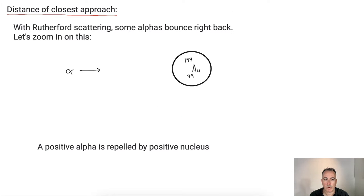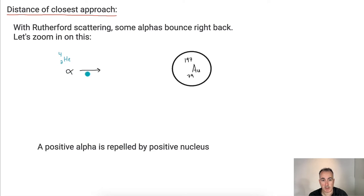Now let's remind ourselves about Rutherford scattering. That's where we learned about alpha particles — remember, an alpha particle is just helium-4. This alpha particle, which is positive, comes in and runs into a nucleus — let's say gold, which is Au. So it's gold-197, the 79th element, with 79 protons.